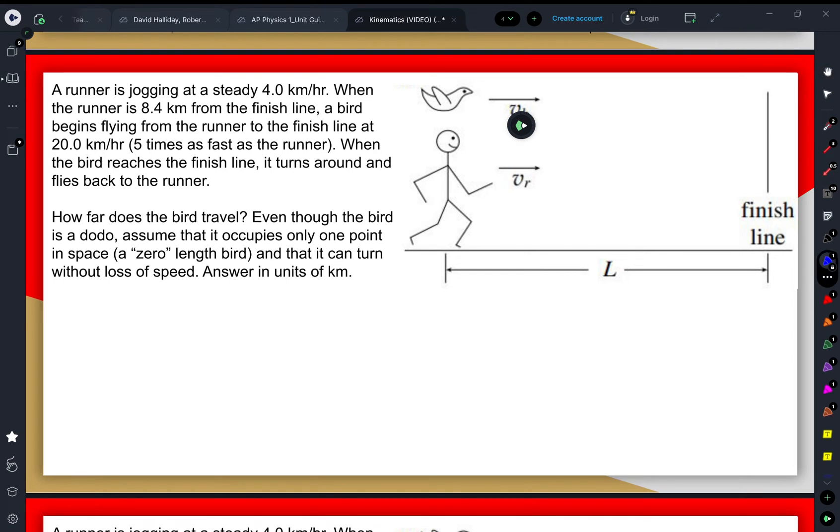Okay, so right now we're going to look at this kinematics problem. A runner is jogging at a steady 4.0 kilometer per hour rate. So that's what this VR means—it is the velocity of the runner. They're traveling at that constant rate of 4.0 kilometers every one hour.